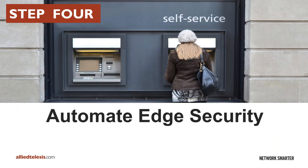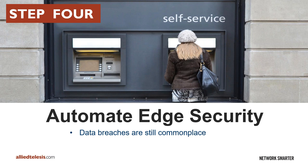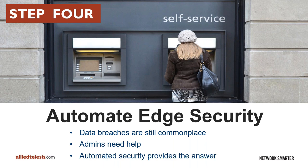Step four is edge security. Every day there are news articles describing data breaches, personal information stolen, networks compromised. In the first half of 2018, more than four and a half billion records containing sensitive information were exfiltrated by data breaches. So current security methods are clearly still insufficient and we cannot afford to be complacent. However, network admins do not have the time to implement and manage the security model they need. In this section, we look at automated solutions for edge security that reduce the risk of data loss without adding management overhead.